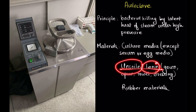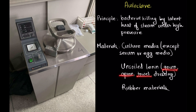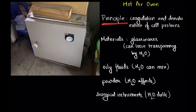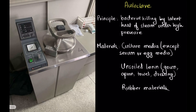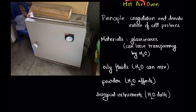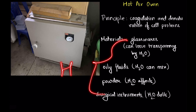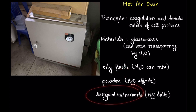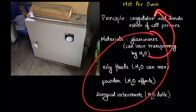Unsoiled linen — linen refers to dressings, and unsoiled means not contaminated by feces, stool, urine, or sputum — such as gowns, aprons, towels, dressings, and rubber materials are sterilized in the autoclave. The principle of hot air oven is coagulation and denaturation of cell proteins. In autoclave, water is used — the latent heat of steam is used. In hot air oven, water is not used; electrical energy is converted to heat energy. The materials sterilized here are those that cannot be sterilized by autoclave or are affected by water: glassware (which can lose transparency due to water), oily fluids (since water cannot mix with oil), powders (affected by water), and surgical instruments (which can become dull due to water). That is why these materials are sterilized by hot air oven.